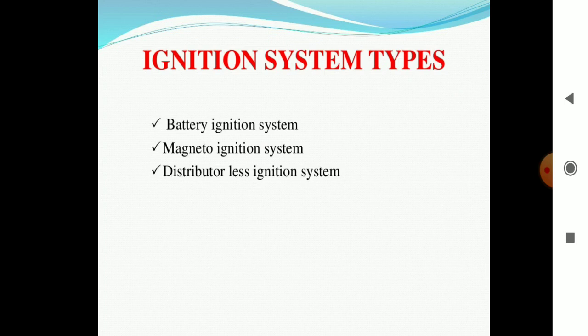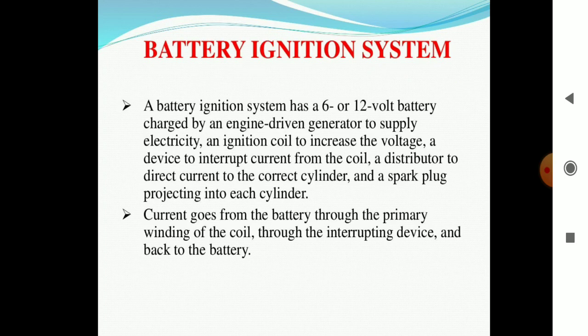There are mainly three types of ignition systems: the first is the battery ignition system, the second is the magneto ignition system, and the third is the distributorless ignition system. The battery ignition system uses a 6 or 12-volt battery. It can use an engine-driven generator to supply electricity, an ignition coil to increase the voltage, and a device to interrupt the current from the coil.